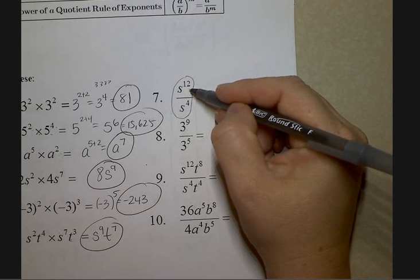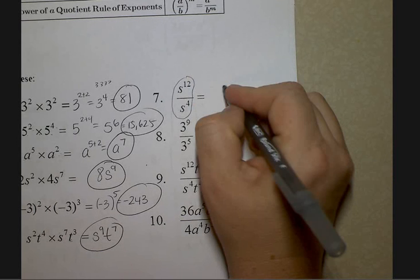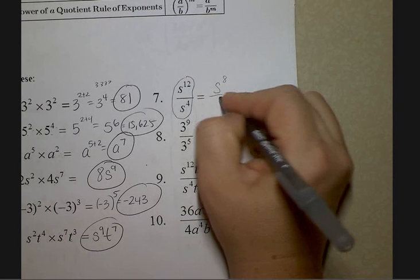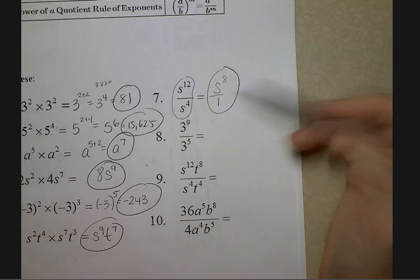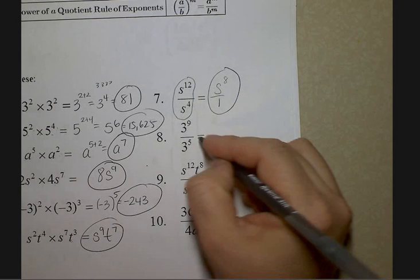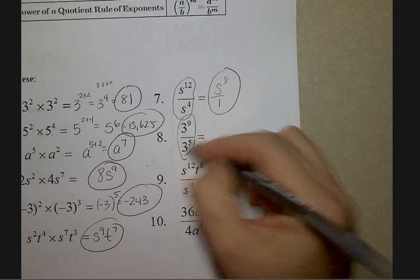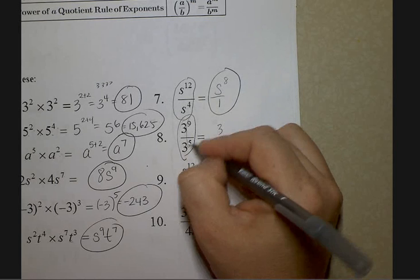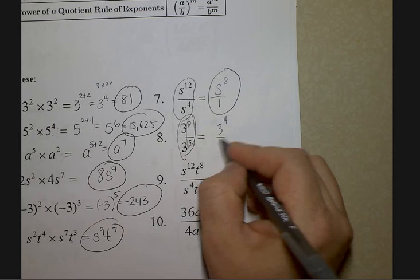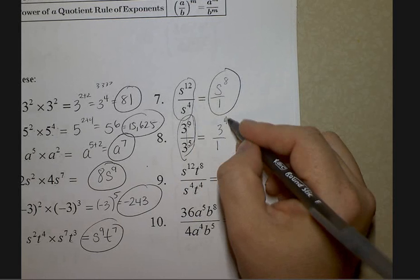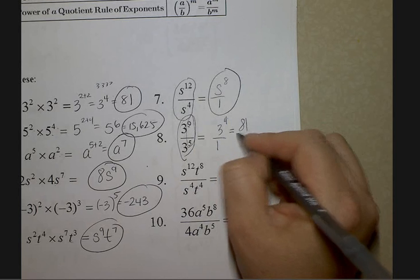So s to the 8 over 1. It's not required that you put a 1 on the bottom, but you can see there's a top and bottom — we'll show you later when it makes a difference. Same base and I'm dividing: 3 to the — subtract exponents — nine minus five is four, written on top where the larger exponent was. We do know three to the fourth: three to the fourth is 81 over 1, which is simply 81.